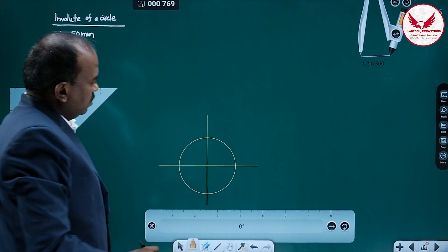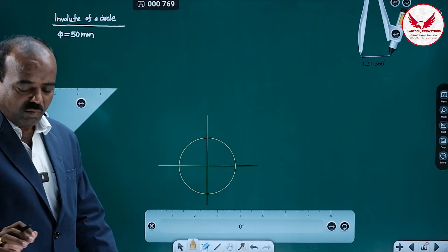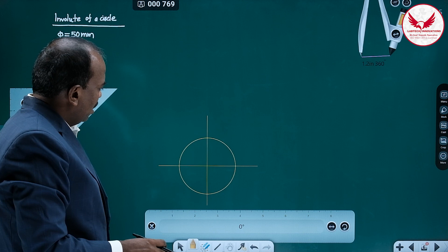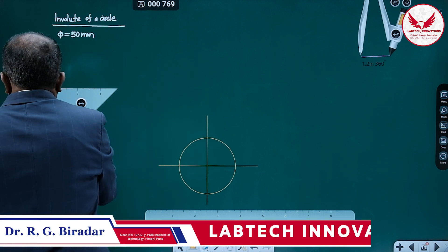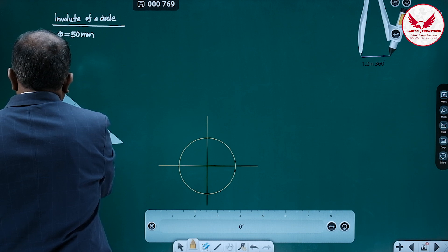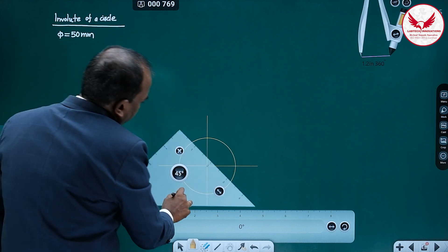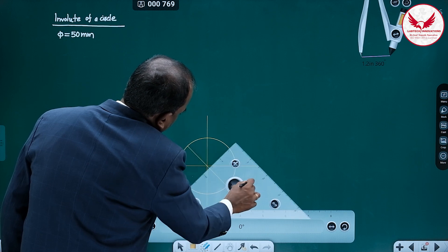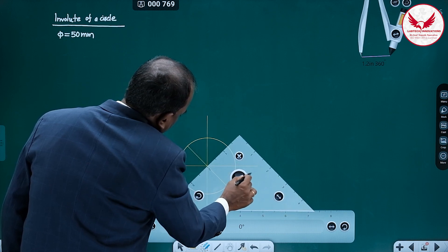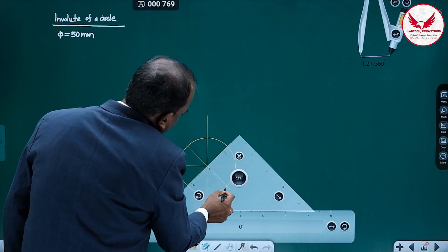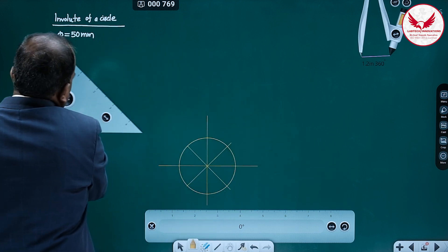Divide this circle into 8 equal parts. Making 8 equal divisions of the circle is very simple. Already it has been divided into 4 equal parts. Now, if I mark 2 additional lines with a 45-degree angle, then easily it will be divided into 8 equal parts. Mark like this — one 45-degree angle line, and again one more 45-degree angle line. Now it has been divided into 8 equal parts.